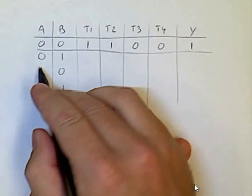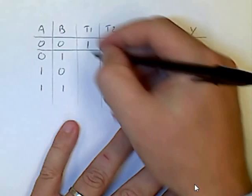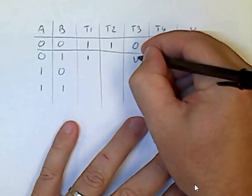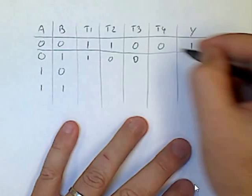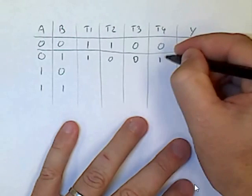Again, if A is zero, then T1 and T3 are the same. If B is one, T2 is zero, and T4 is one.